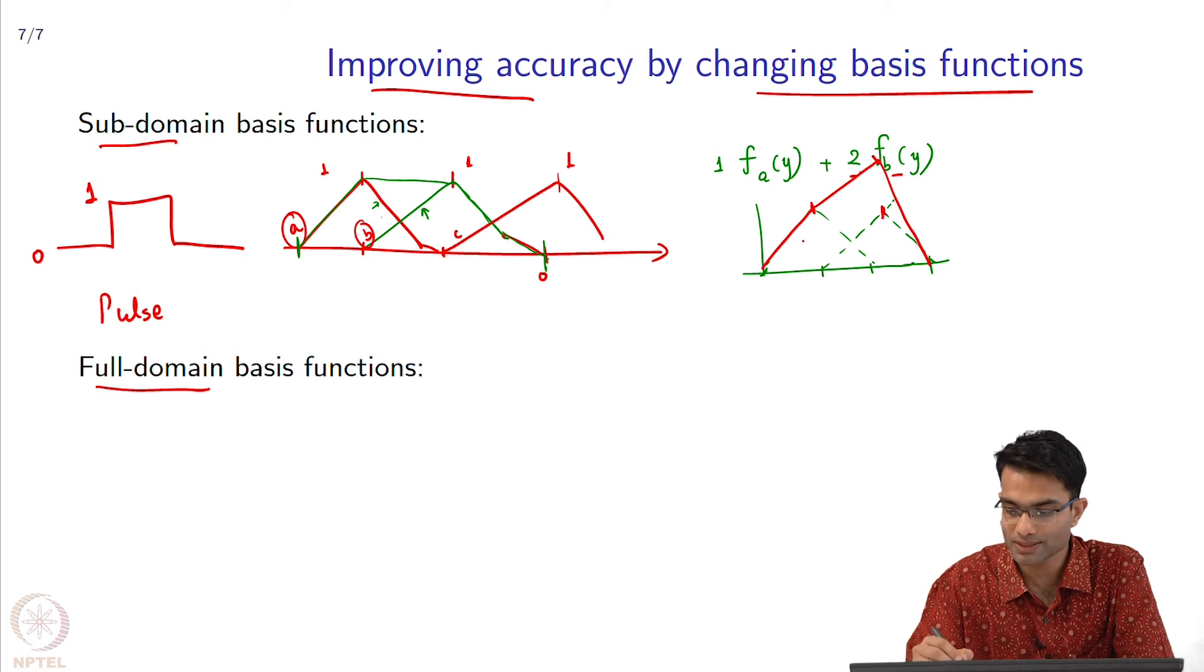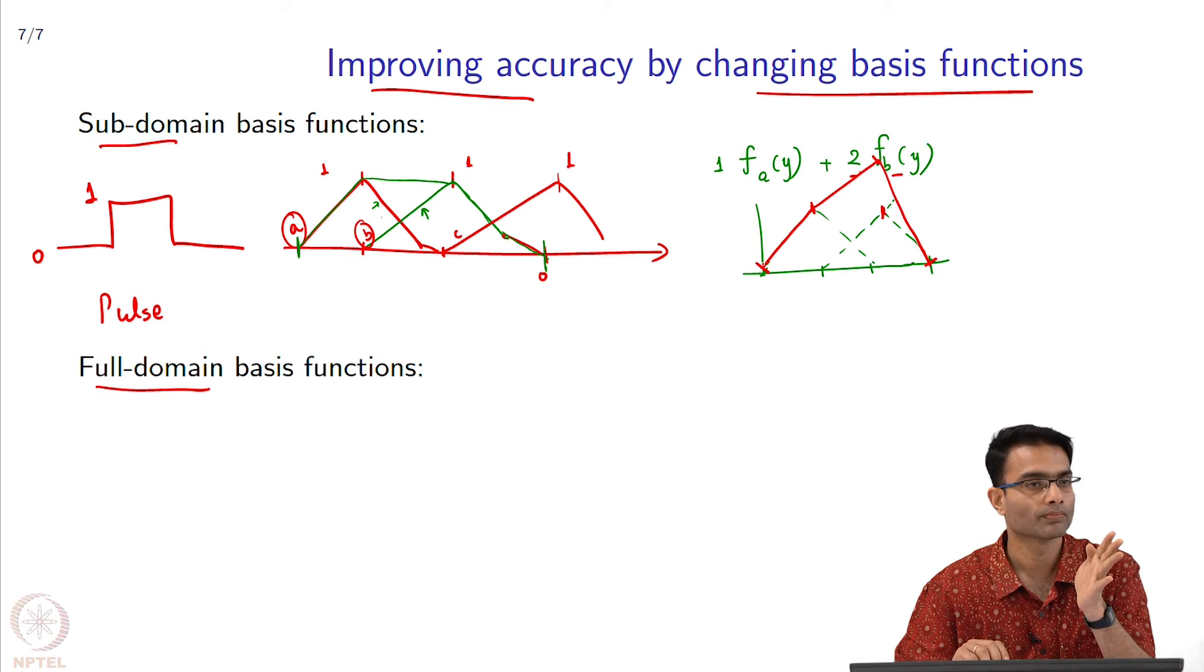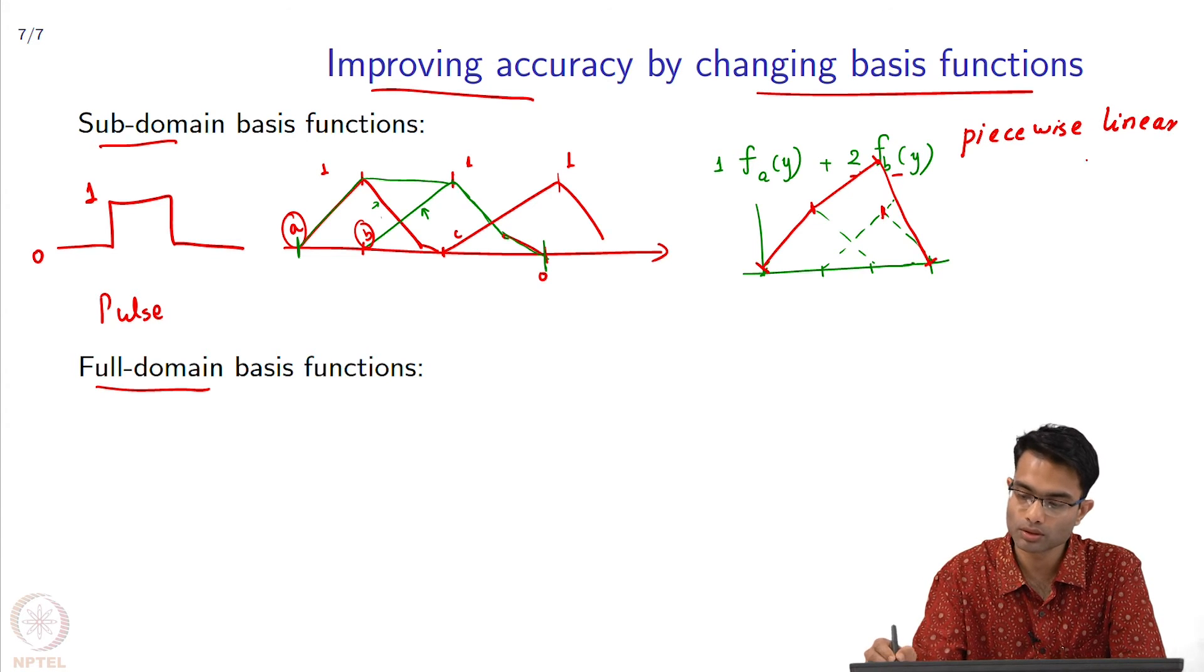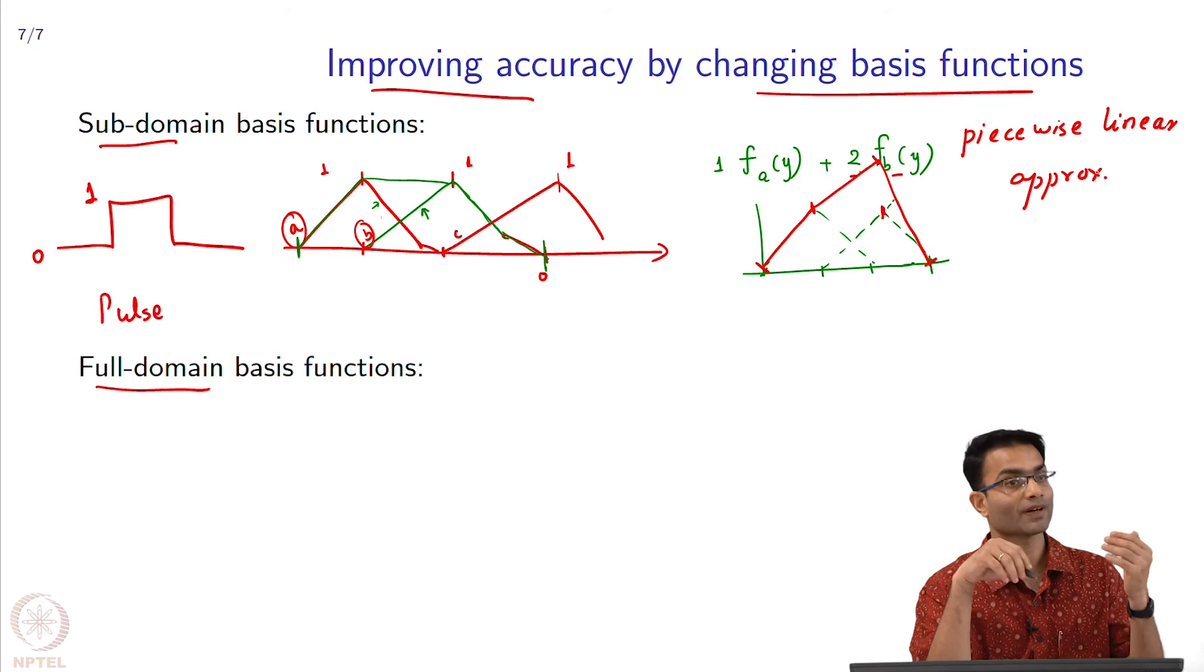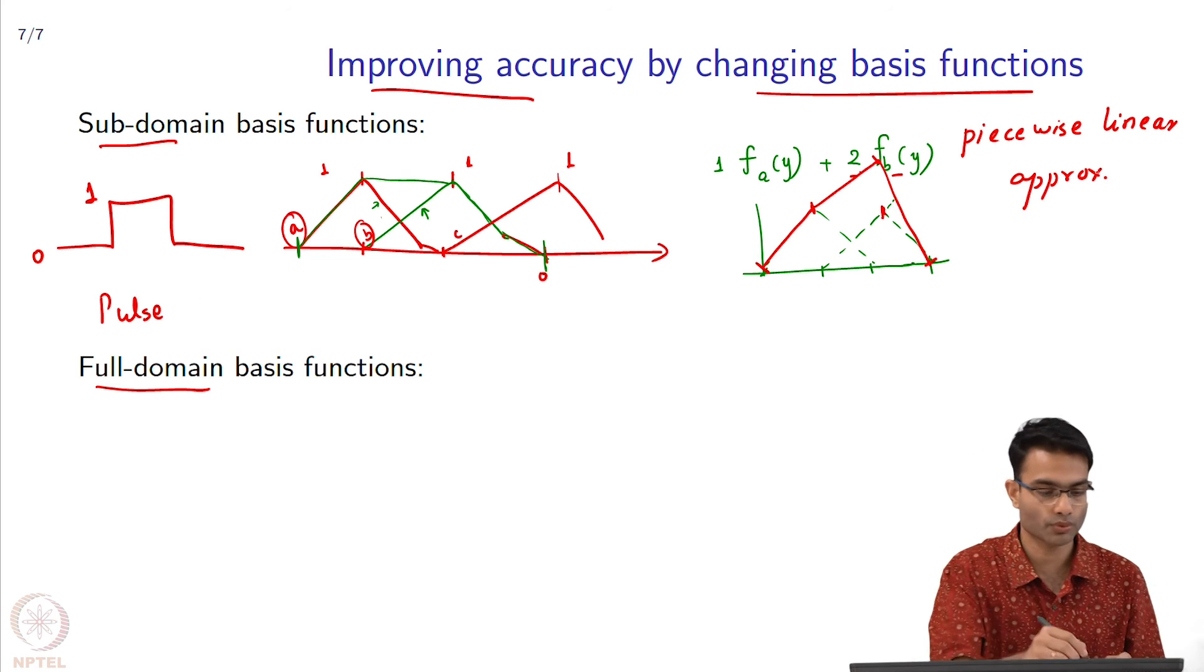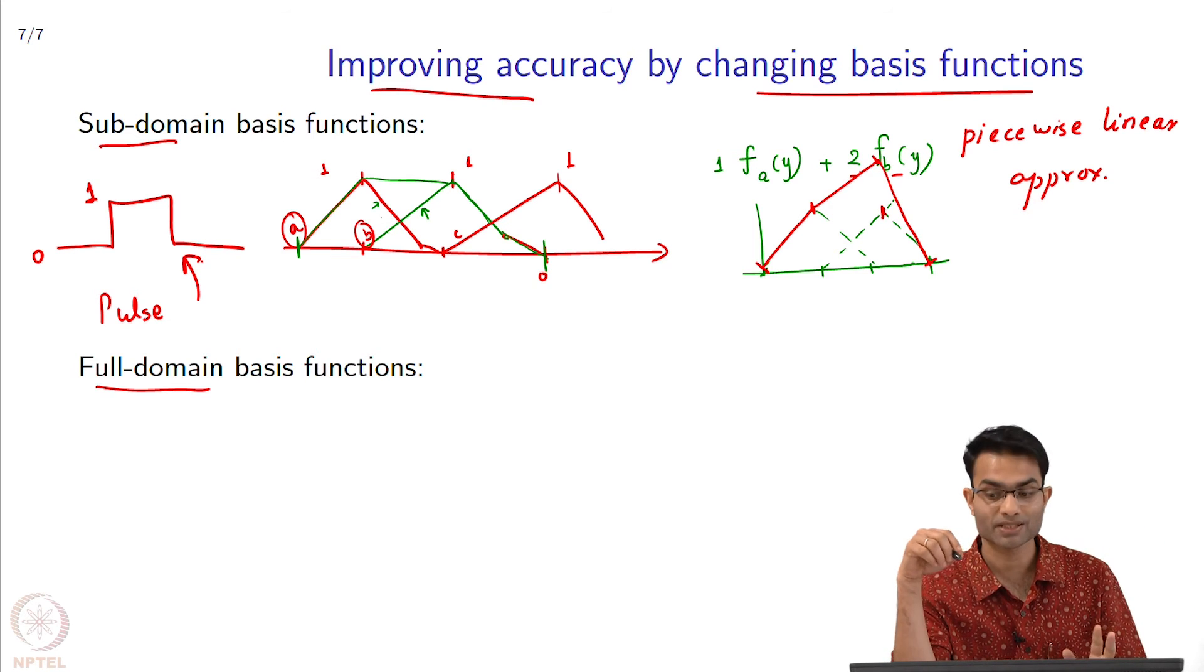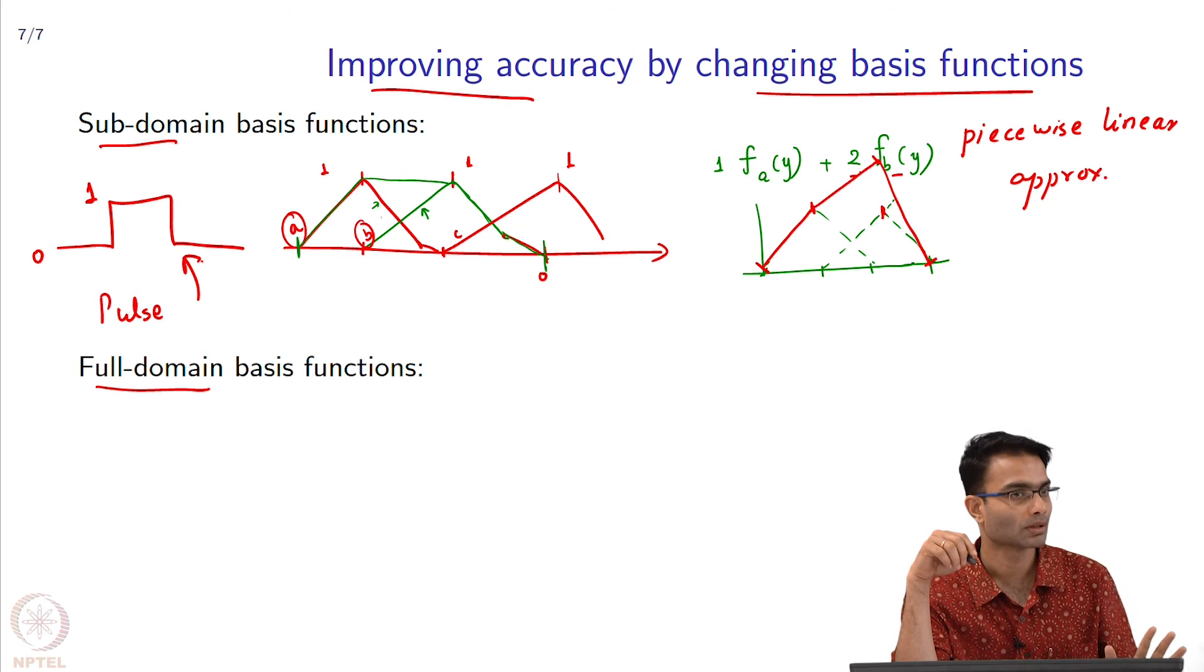By doing this, what will you call these three segments? They are linear. What I have done is I have replaced this function by piecewise linear approximation. My function that I am approximating now is continuous. Earlier my function that I was expressing using pulse basis function was discontinuous. I have now moved to a continuous basis function, but it is still not differentiable—it is not smooth, but it is better than pulse.